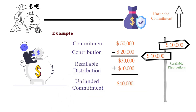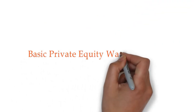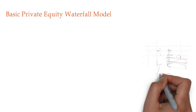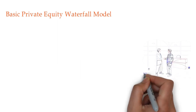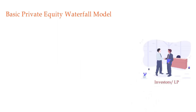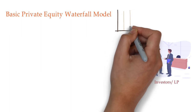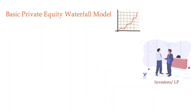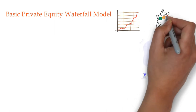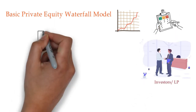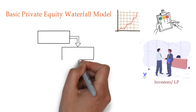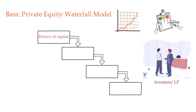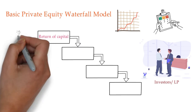Now let's discuss the basic private equity waterfall model. It is important for investors to properly assess a private equity fund's waterfall — the allocation of distributions between the general partner and limited partners — in order to ensure proper alignment of interests. There are four primary components to a distribution waterfall, starting with return of capital: all money received from investors should be returned first.